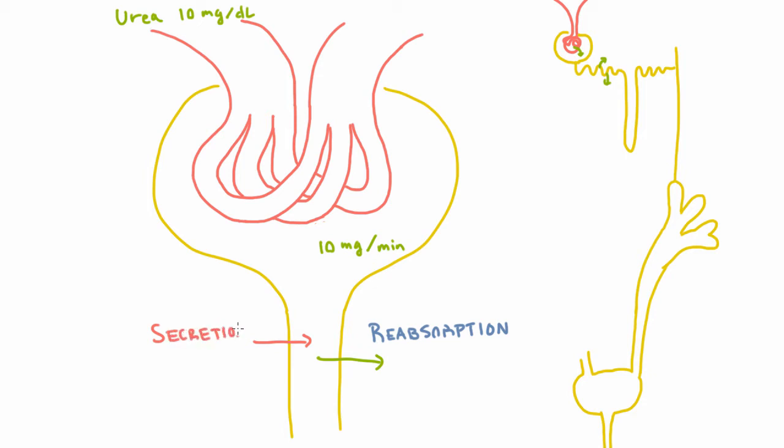And the idea of secretion is that instead of reabsorbing something into your bloodstream, you can actually take something from your bloodstream and put it directly into the tubules of the kidney through the walls of the tubule rather than by filtering it at the glomerulus.